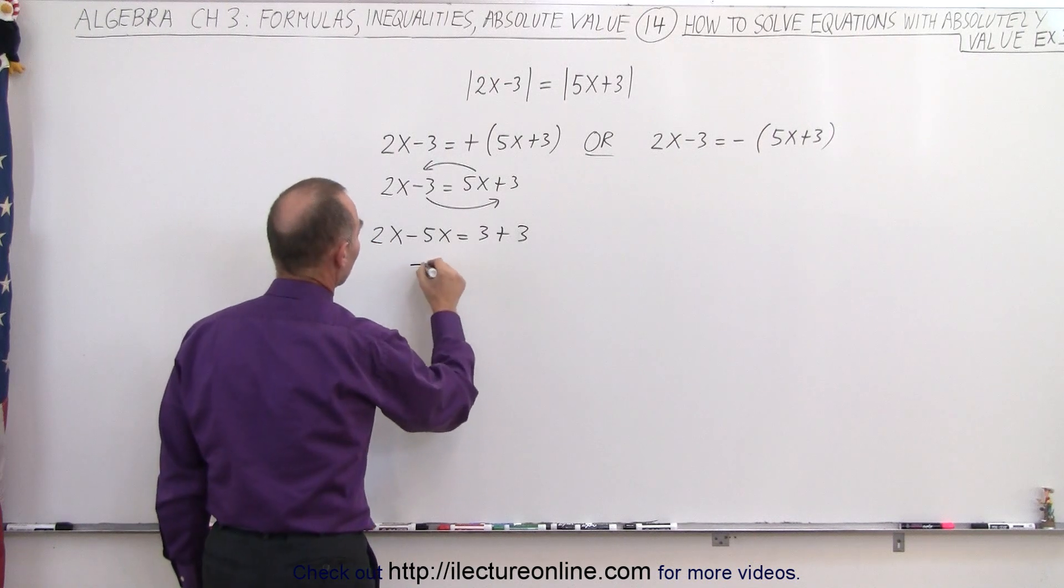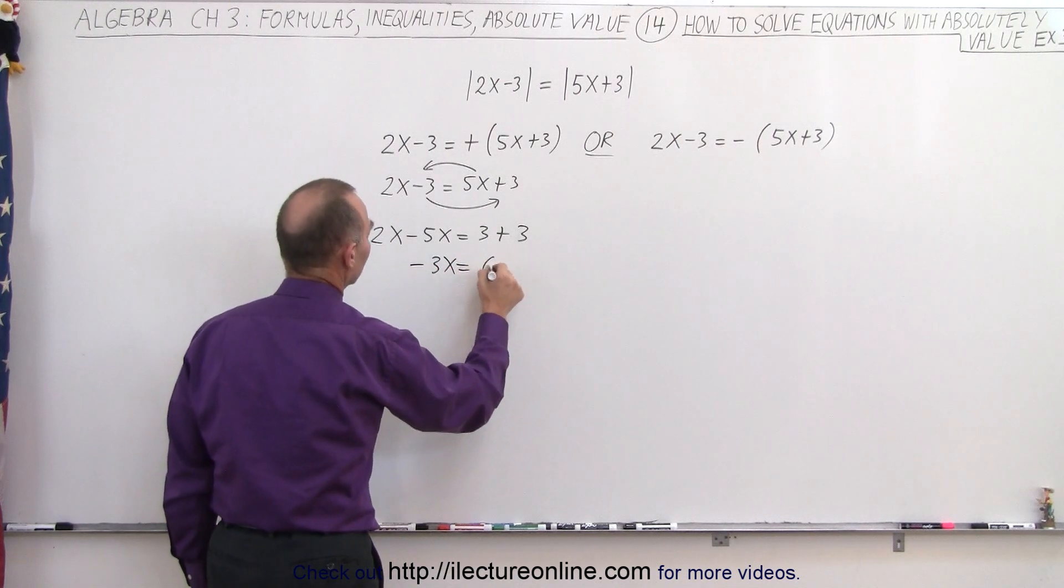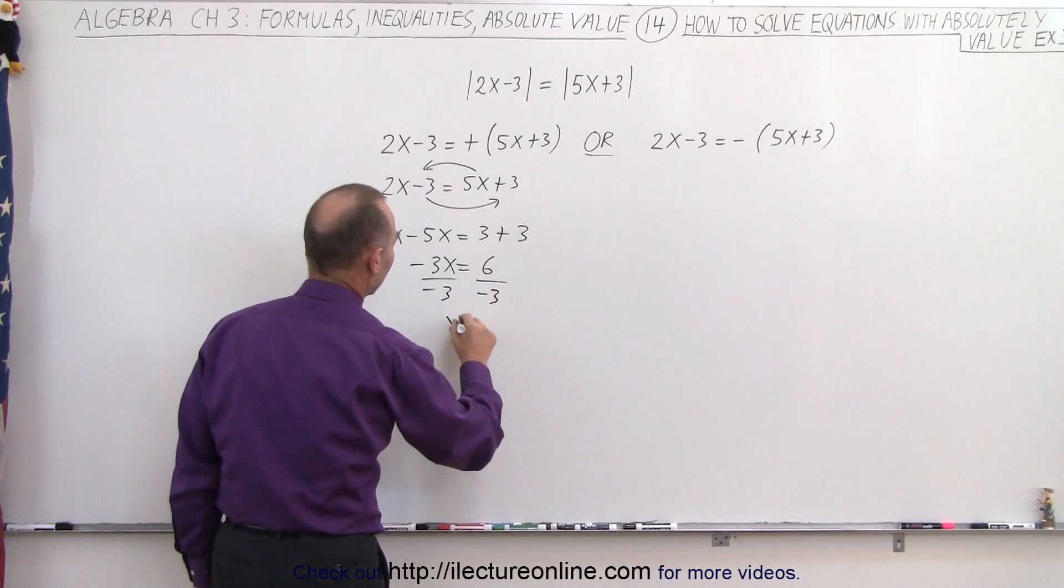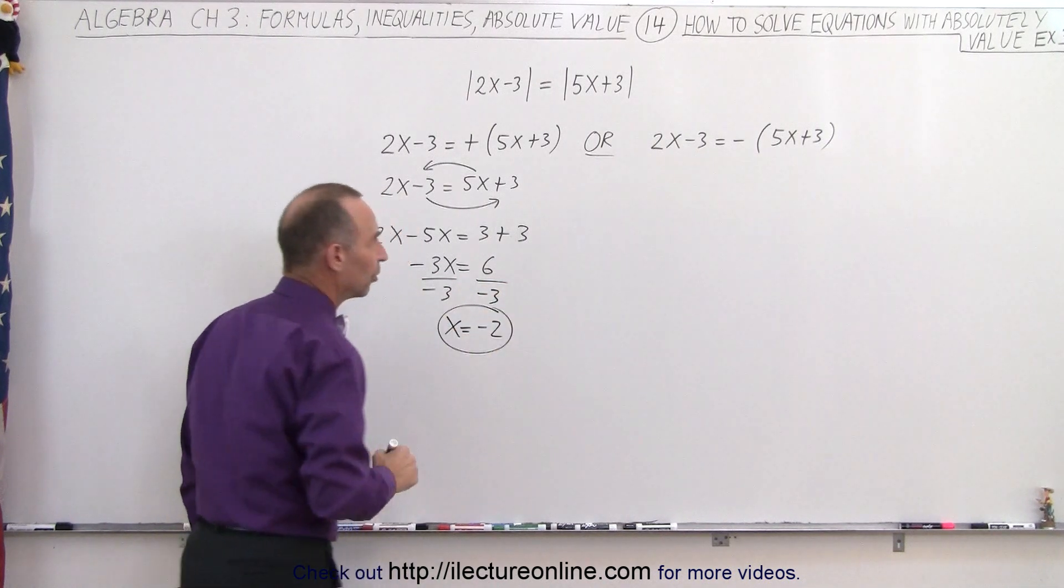Now we combine like terms, minus 3x is equal to 6, divide both sides by negative 3, and we end up with x is equal to negative 2 as one possible solution.